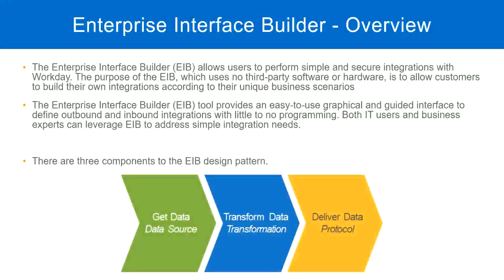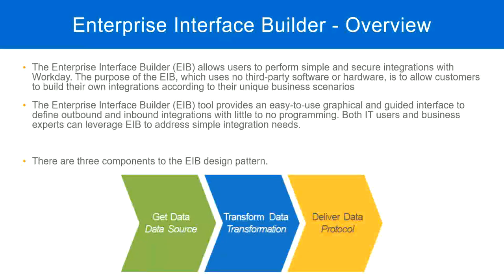What we are going to do is configure these three steps. First, get data — where are we going to get the data from? That is something we have to configure. Do we need transformation? If yes, configure that; if no, leave it blank. And then deliver the data — how are we going to send the data to an external system? We have to configure that as well. Once we do these three steps, our EIB is ready.